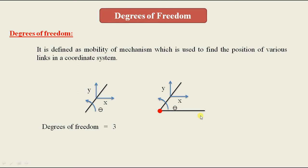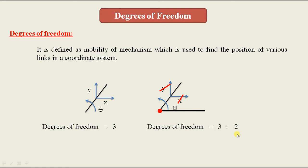When a link is connected to a fixed link via a pin joint, it loses two degrees of freedom — translation in x and translation in y — and retains only one degree of freedom in the form of rotation. So a pin-jointed link goes from three degrees of freedom to one, losing two degrees of freedom at each joint.